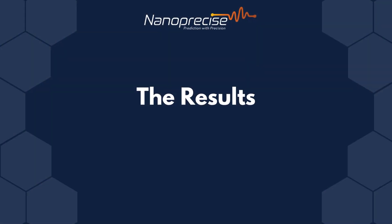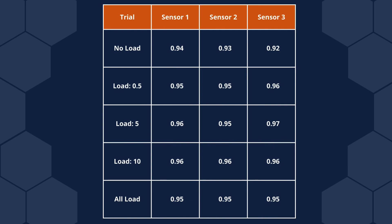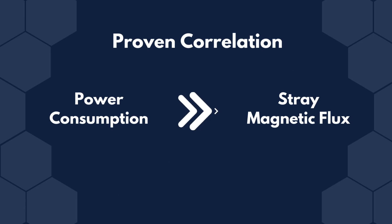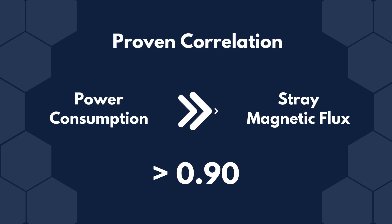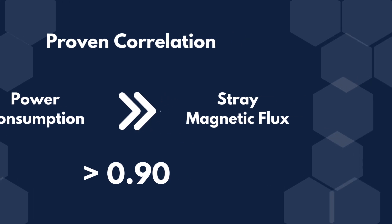Across a total of 134 trials, which included varying loads and RPMs, the Machine Doctor sensors were able to detect a statistical correlation between stray magnetic flux and power consumption. On average, the tests delivered a correlation coefficient of greater than 0.95, denoting a very strong correlation between the two.